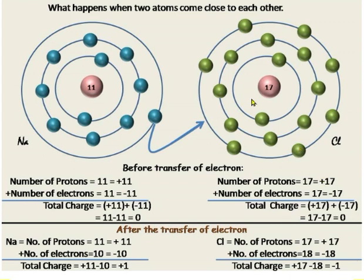So now we understand what happens when two atoms combine or come close to each other. One atom gives its electron to the other atom, and due to this transfer of electrons a bond develops called a chemical bond. Due to this bond these atoms remain together and form a molecule.